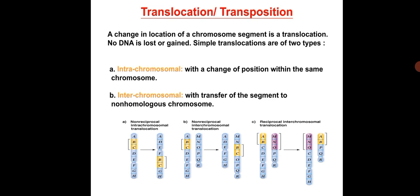Translocation or transposition is a change in the location of a chromosomal segment with no DNA lost or gained. It is of two types: intra-chromosomal translocation, in which there is a change in position of a segment within the same chromosome, and inter-chromosomal translocation, in which a segment is transferred to a non-homologous chromosome.